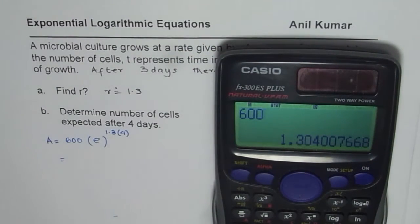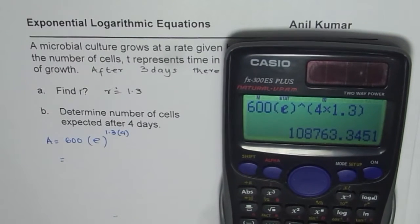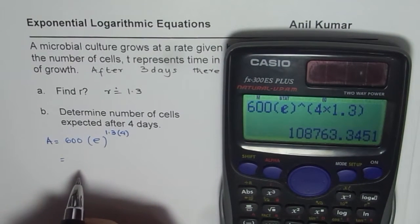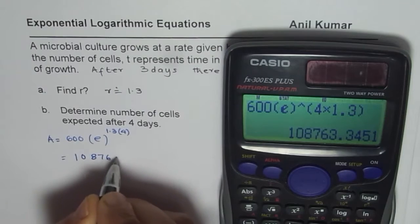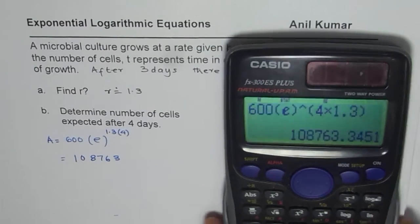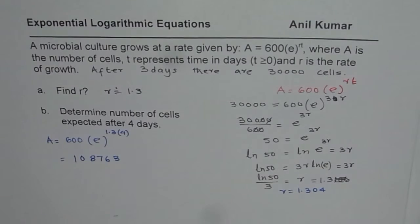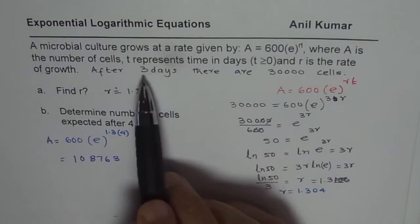It is 600 times e, and the exponent is 4 times 1.3. Let me use 4 times 1.3 and calculate. We get the answer as 108,763. We can drop the decimal value. So what do you notice here is that in three days there were 30,000 cells, now in four days we are having more than a hundred thousand cells.